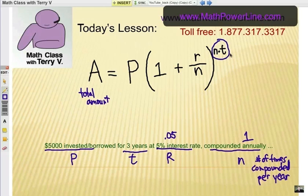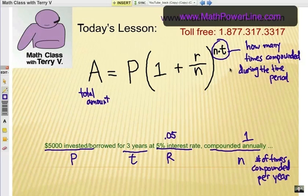Here's a shortcut. Instead of figuring out the n and the t and multiplying it, what it really means is how many times compounded during the time period. Again, it's how many times compounded during the time period given.